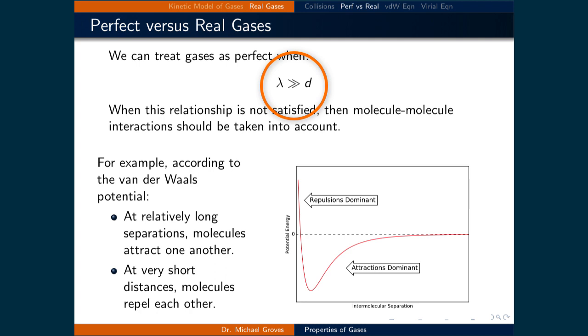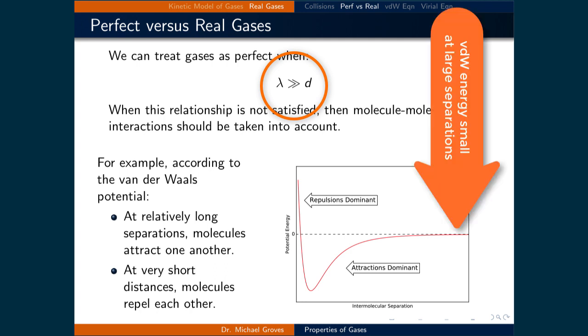In other words, if the distance a molecule can travel before it hits another molecule is much larger than its diameter, then it means that the van der Waals forces are typically very small at any given time and can therefore be neglected.